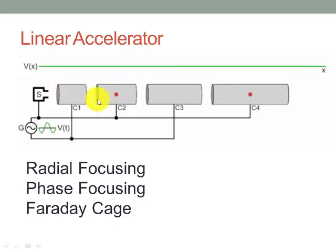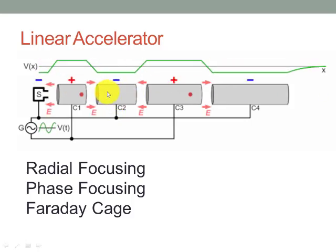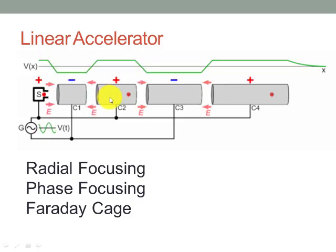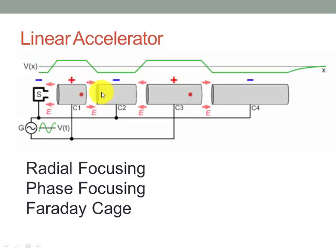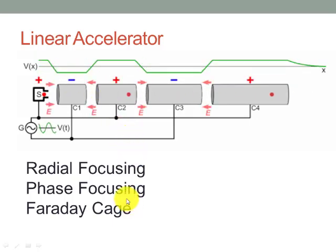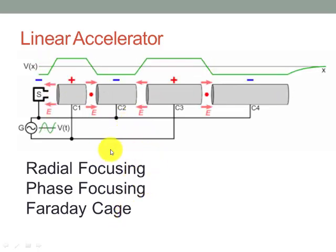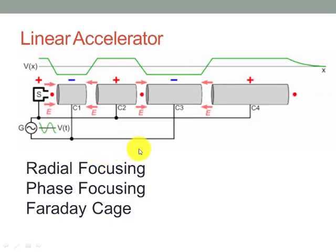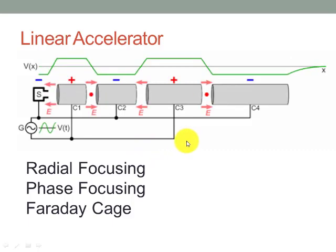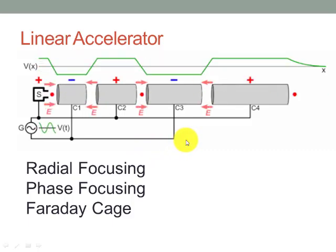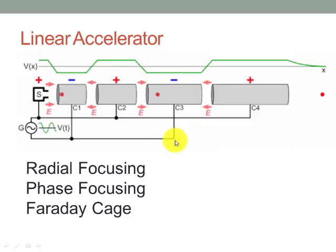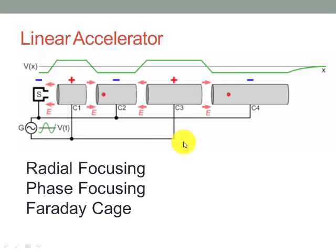Radial focusing is required to keep the particle on axis. Phase focusing is the process of making all charged particles reach successive gaps with a constant phase difference between them, because the phase difference between particles may change in the gap due to different energies gained. Another factor is Faraday caging, which is provided by the drift tube — the drift tube acts as a Faraday cage when a particle passes through. The frequency of the driving signal and the spacing of the gaps are designed so that the maximum voltage difference appears as the particle crosses each gap, accelerating the particle and increasing its energy and velocity.